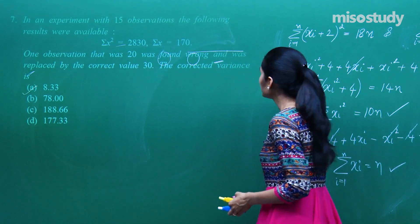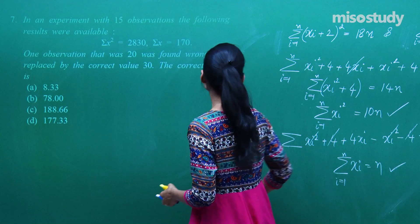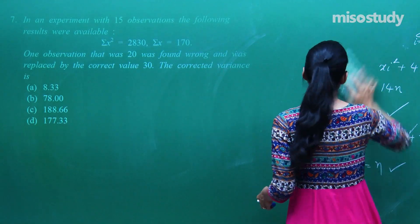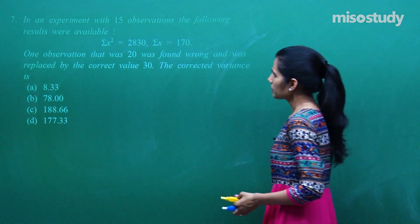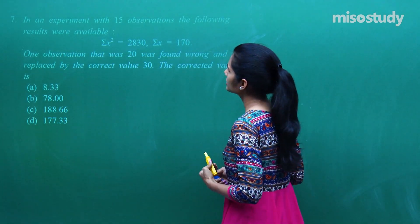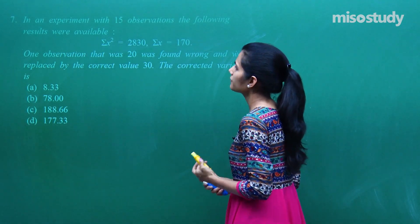Then you have in an experiment with 15 observations, the following results are available. Summation x square is this and summation x is this. One observation 20 was found wrong and was replaced by the correct value 30.